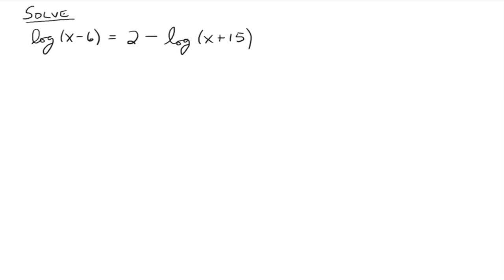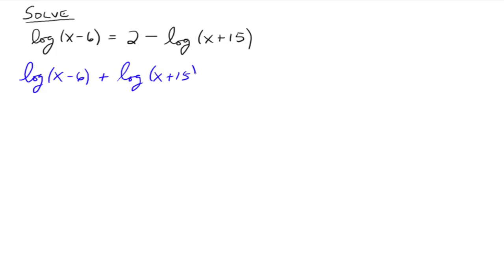Let's try another one. Log of x minus 6 equals 2 minus the log of x plus 15. You cannot distribute this log through and write it as the log of x minus the log of 6 — this is not multiplication, it's the log of the quantity x minus 6, all one notation. The most common error is to distribute the log through, so please fight that temptation. We notice we've got a log on each side with the same base, so we need to get all the logs on one side: log of x minus 6 plus log of x plus 15 equals 2.